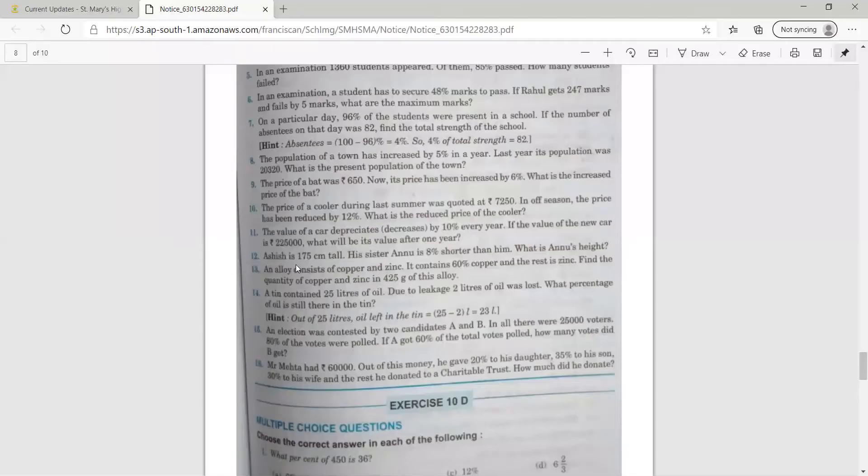Ashish is 175 cm tall. His sister Anu is 8% shorter than him. What is Anu's height?